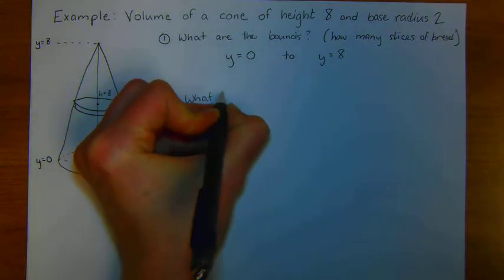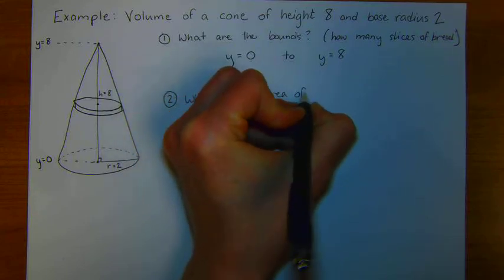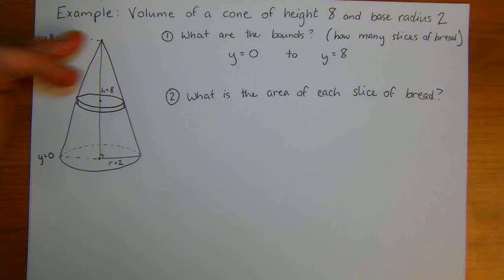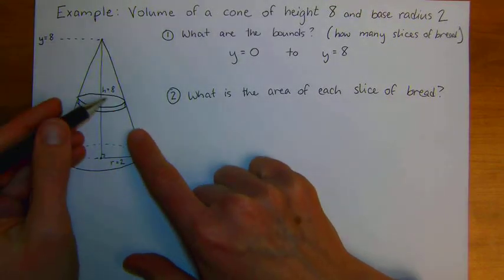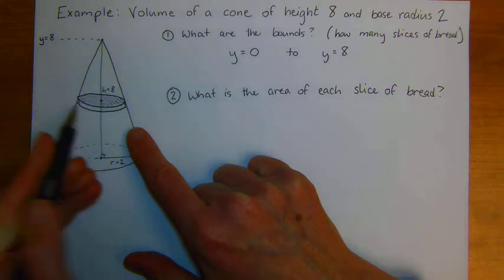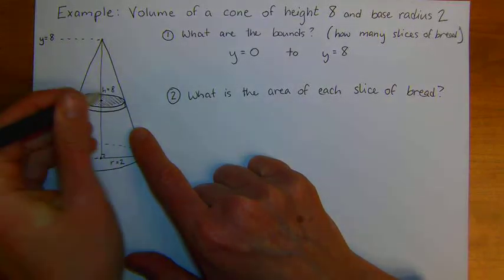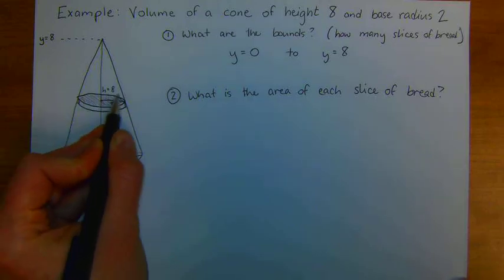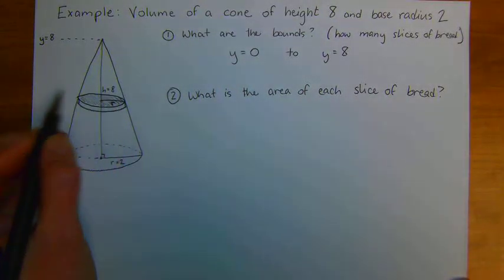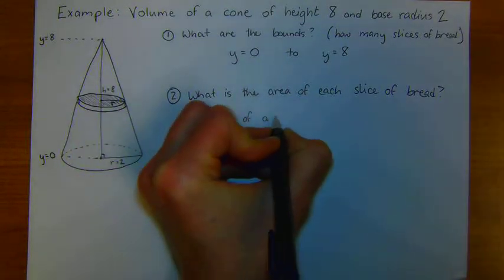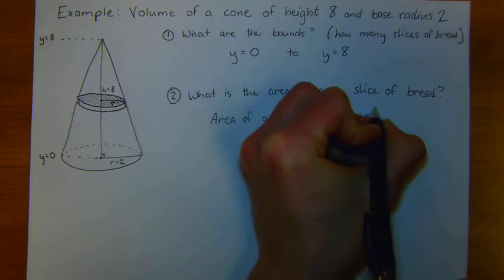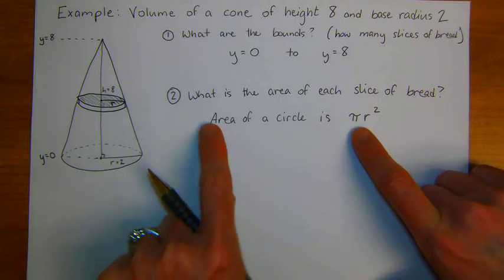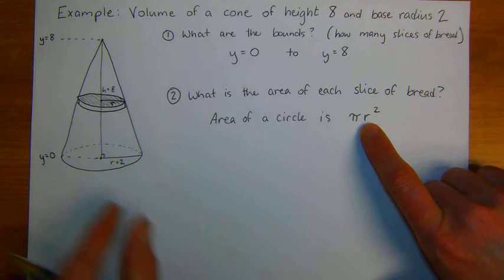The harder question is, what is the area of each slice of bread? So I'm slicing up this cone into all of these different slices, and I want to know what is the area, like the surface area of the base of each of these slices. In this case, each of the slices of bread is a cylinder or an exact circle. So the area of a circle is pi r squared. The problem is that r is changing. R is a variable.